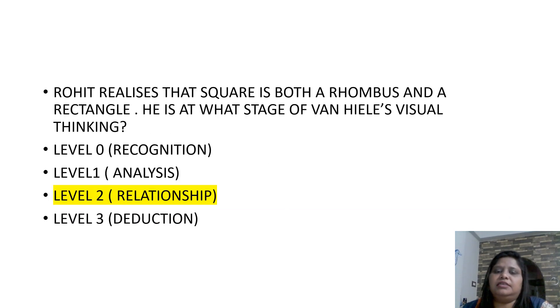Rohit realizes that the square is both a rhombus and a rectangle. He is at the stage of Van Hiele's visual thinking. So, this is level 2 relationship. This is level 2 relationship in Van Hiele's visual thinking.